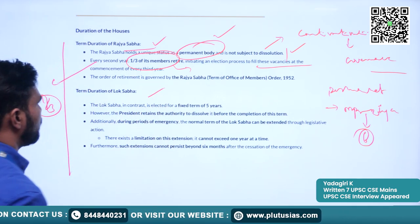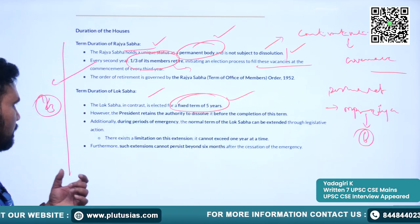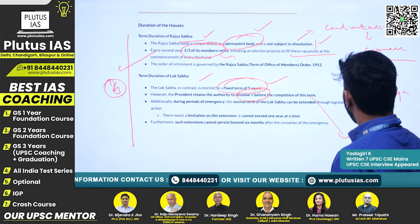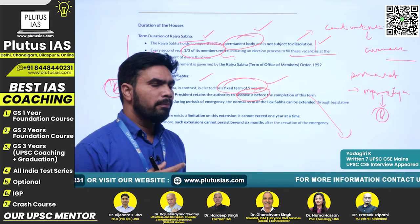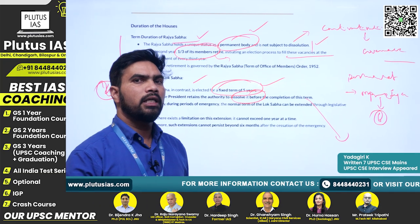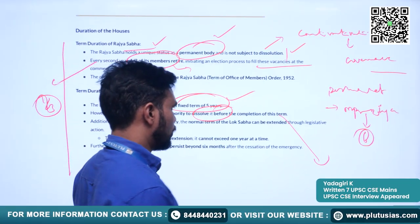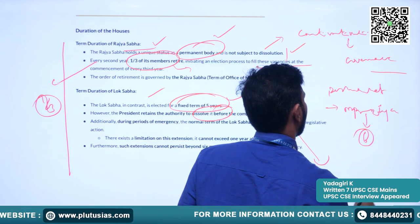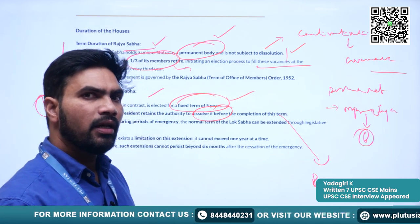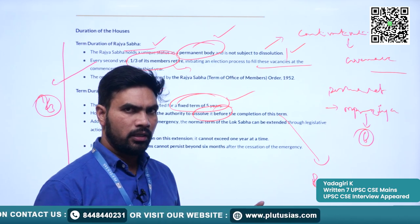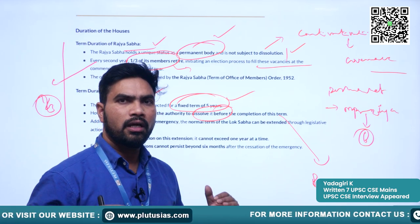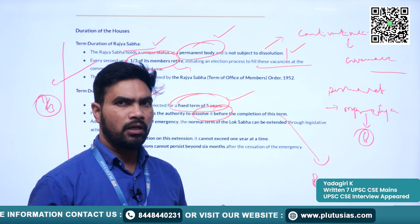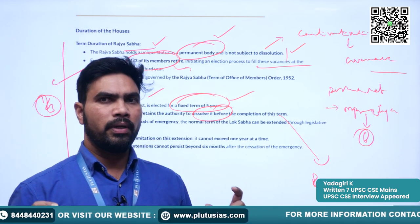Now we will understand the duration of the Lok Sabha. It has a fixed term of five years. However, the President retains the right to dissolve the house before the completion of its term. In many cases, the Lok Sabha has been dissolved before its complete term of five years. As discussed yesterday regarding the prime minister, the prime minister can recommend the dissolution of Lok Sabha when unable to form a stable government. When there is a hung Lok Sabha — where no particular party holds an absolute majority — forming and continuation of the government becomes difficult, and the house can be dissolved earlier.